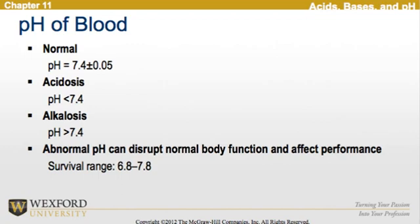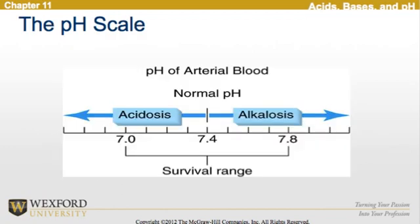In acidosis, the pH is less than 7.4, while in alkalosis the pH is greater than 7.4. An abnormal pH can disrupt normal body function and affect performance. The survival range of a human is 6.8 to 7.8. Here we see a diagram of the pH scale showing acidosis, alkalosis, and the normal pH range within the survival range.